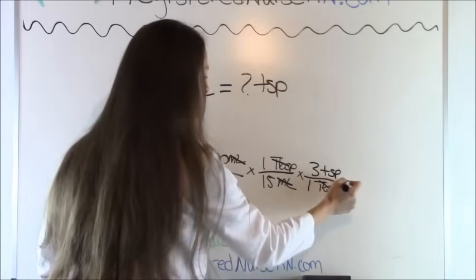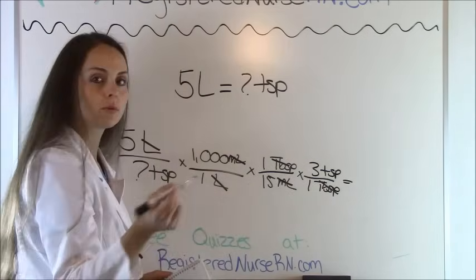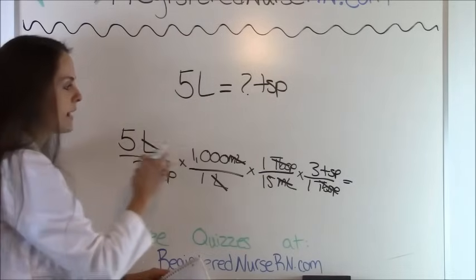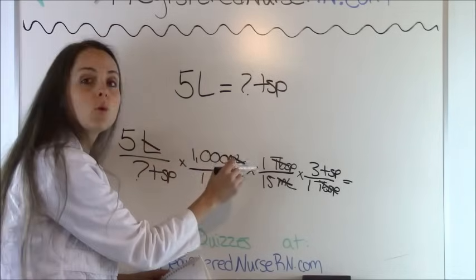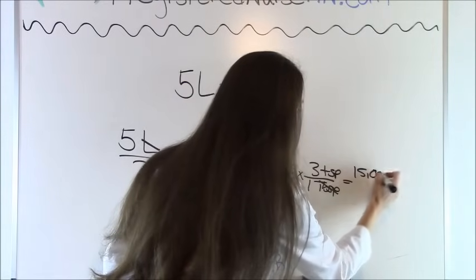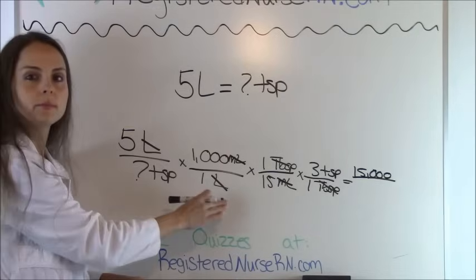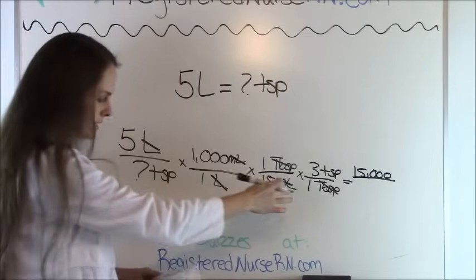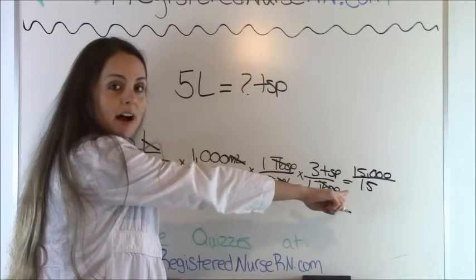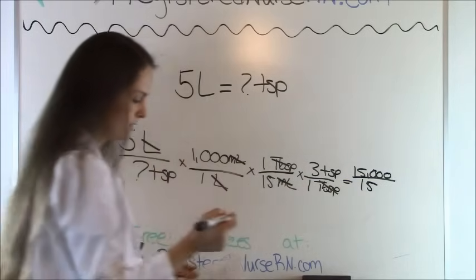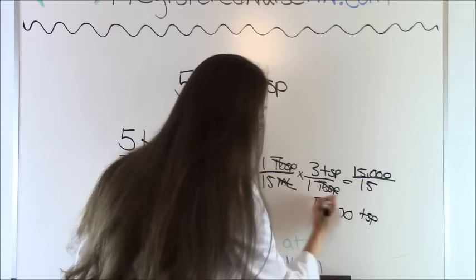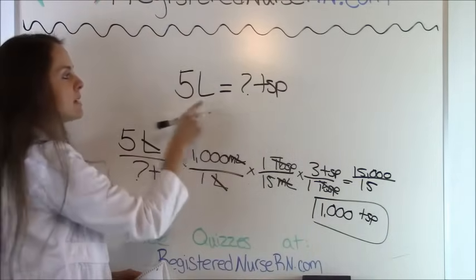Tablespoons cancels out and we stop because we're where we're supposed to be — teaspoons. Multiply everything on top: 5 times 1,000 times 1 times 3 equals 15,000. Multiply everything on the bottom: 1 times 15 times 1 is 15. Divide: 15,000 divided by 15 equals 1,000. So there are 1,000 teaspoons in 5 liters.